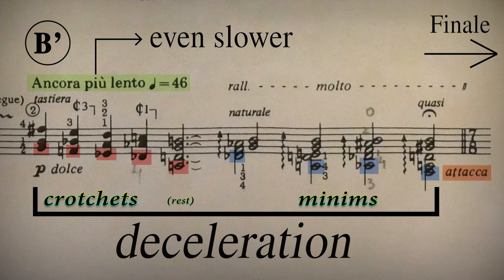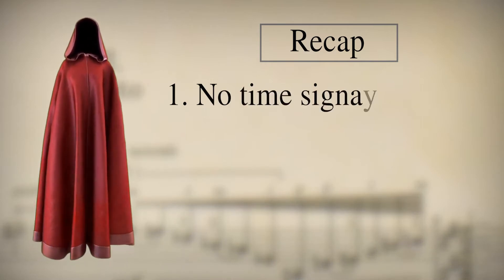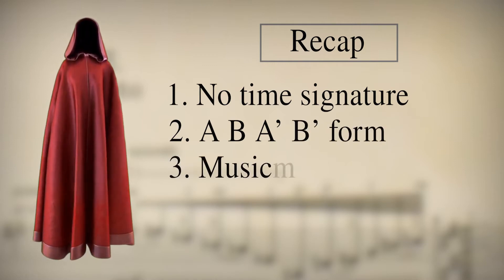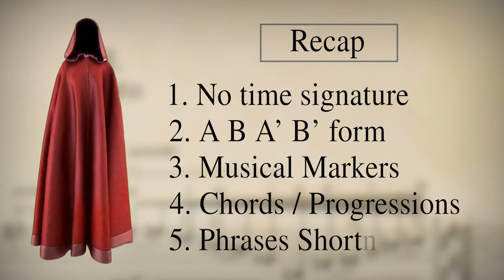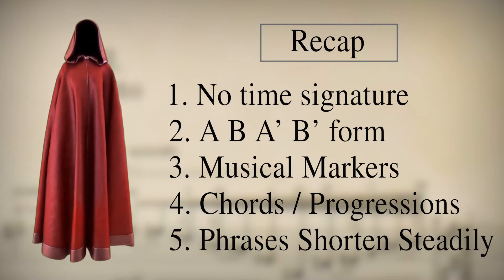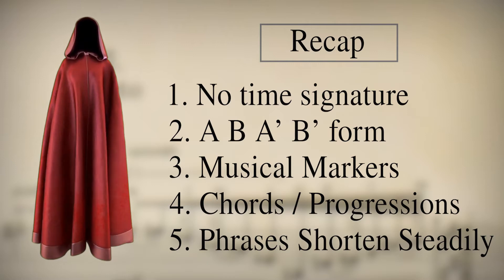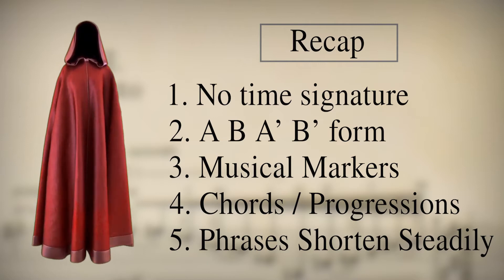The attacca indication tells the performer to begin immediately, treating the third and fourth movements almost as one. To recap: the third movement, Canto, is a very contrasting chapter with no time signature, driven by beautiful phrases. We can identify an A-B-A-B form, each section having specific characteristics and a musical marker — a chord for the A section and a harmonic progression for the B section. Upon return, phrases become shorter and shorter. The overall color is poetic, rhapsodic, and contemplative — a chant to the soul.